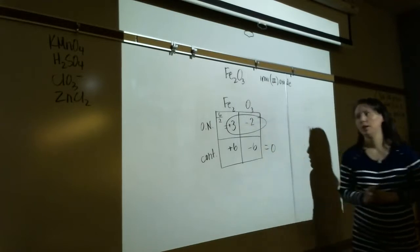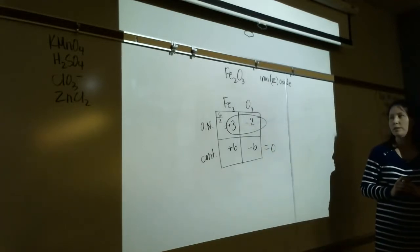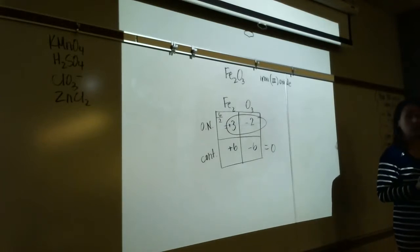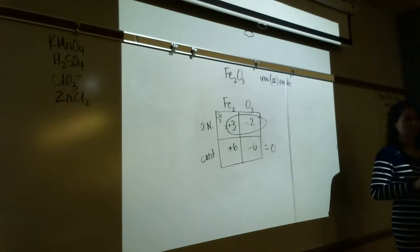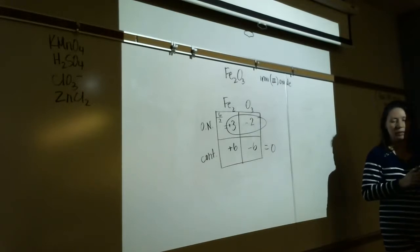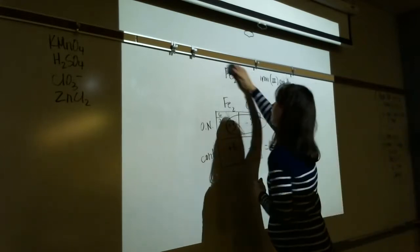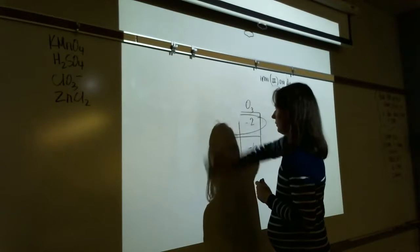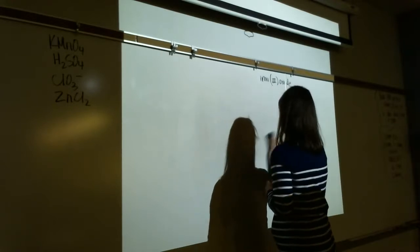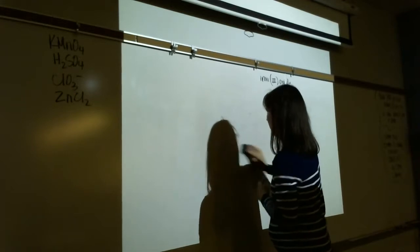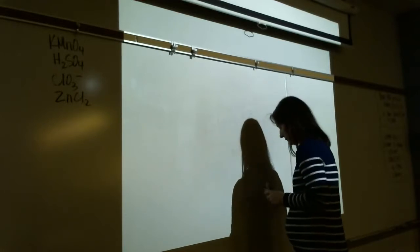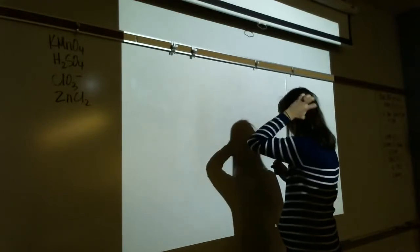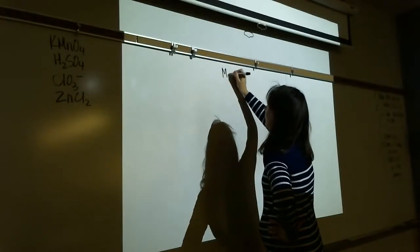CO2 — carbon dioxide. No rules for carbon. Oxygen is -2, two oxygens contribute -4. Carbon must be +4. Once you get good at this, you may not need the chart anymore — you can do it in your head.